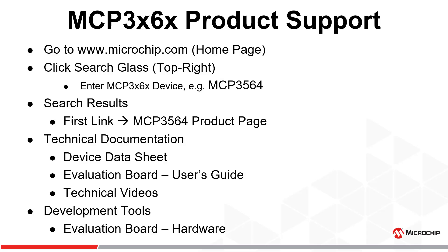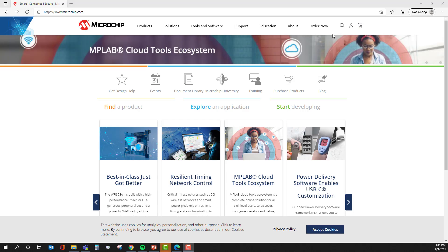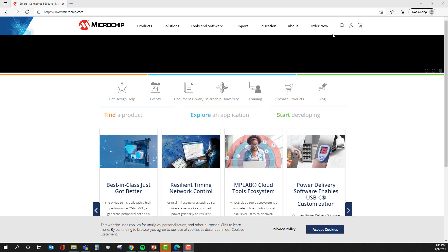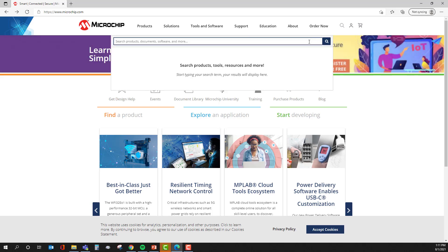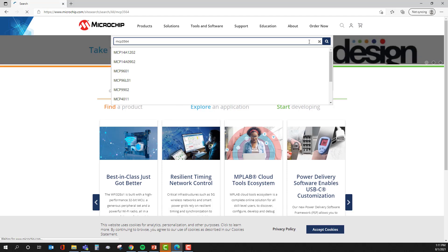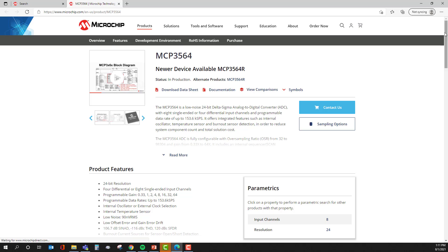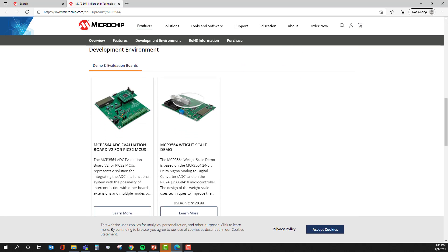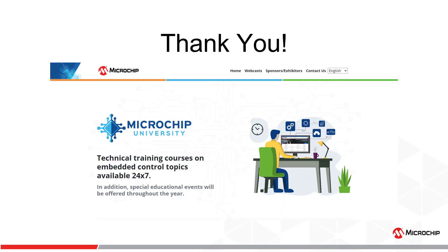This concludes our presentation on the SPI interface, offset and gain error calibration, and digital output functions available on the MCP-3X6X family of Delta Sigma ADC converters. For more information regarding the MCP-3X6X family, please go to www.microchip.com, click on the search icon on the top right corner of the home page, enter the part number of the device you wish to search for, and select the product page where the device data sheet and any demo and evaluation boards will be provided. Thank you for viewing this third and final video, and please check out our other technical videos and courses at www.microchip.com/MU.